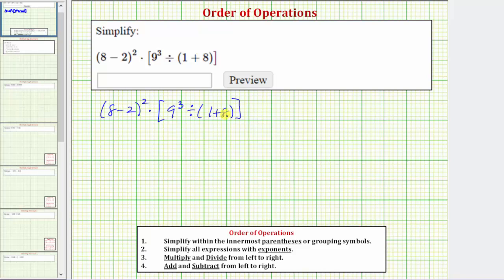Following the order of operations, we want to simplify within the innermost parentheses or grouping symbols first. Notice how we have these parentheses inside the brackets. Therefore, the first step is to simplify these parentheses here. Eight plus one is equal to nine.